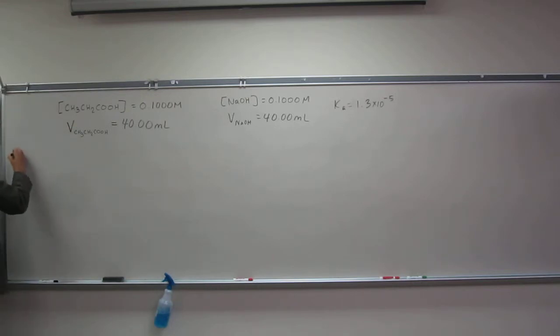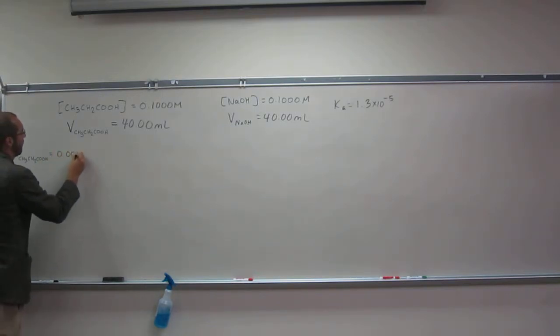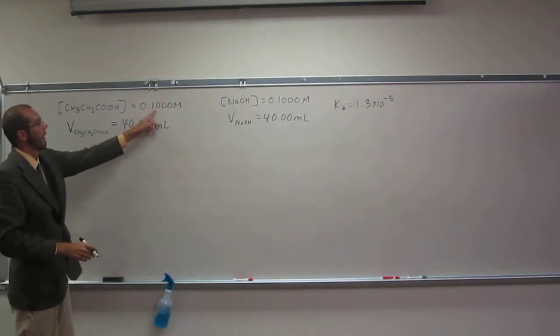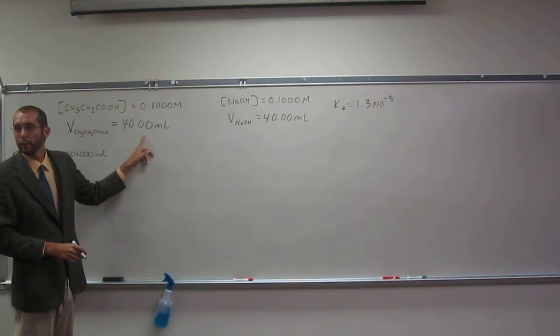So, if you recall, we got this from the last problem, the number of moles of propionic acid was 0.00400 moles, right? We took that and got it.